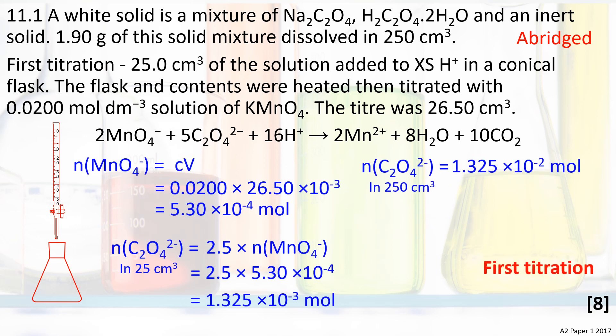Here's the first exam technique tip: show your working out. Show the equations, the species that the equation is related to, and the numbers that you are using. Include units, even on your in-process results. The concentration and volume of manganate can be used to work out the amount of manganate ions: 5.30 × 10⁻⁴ moles.